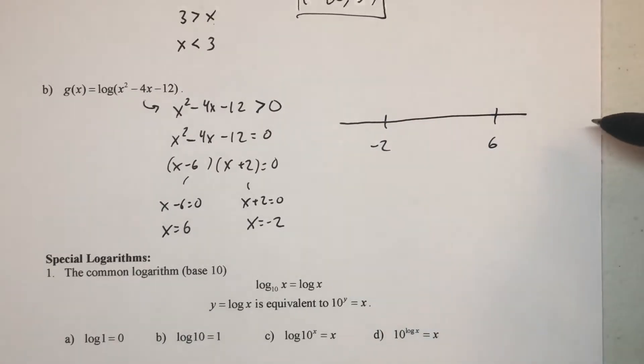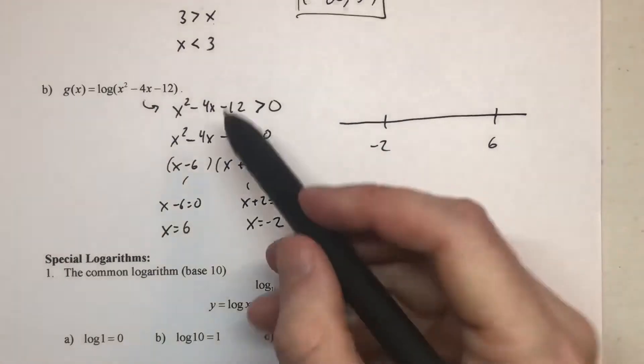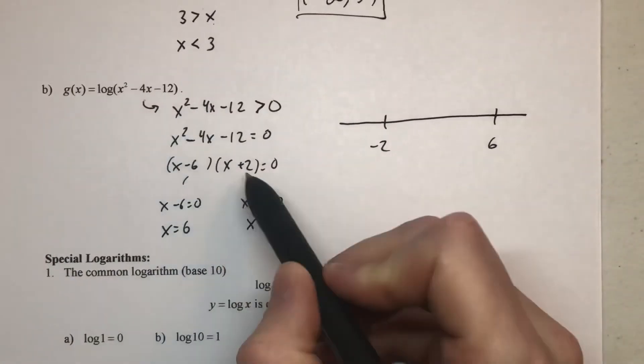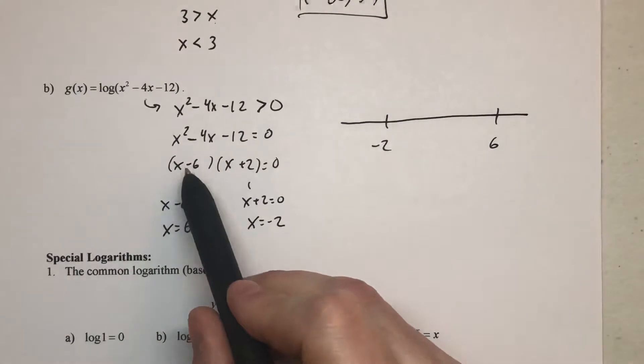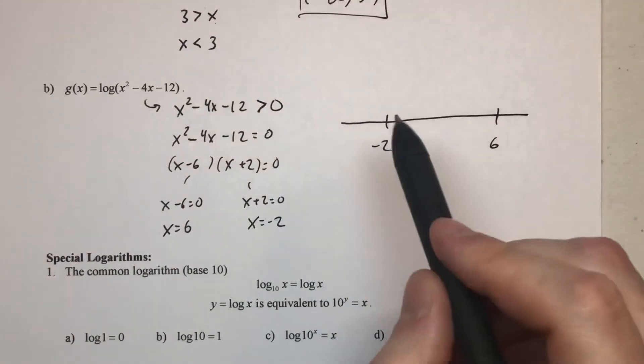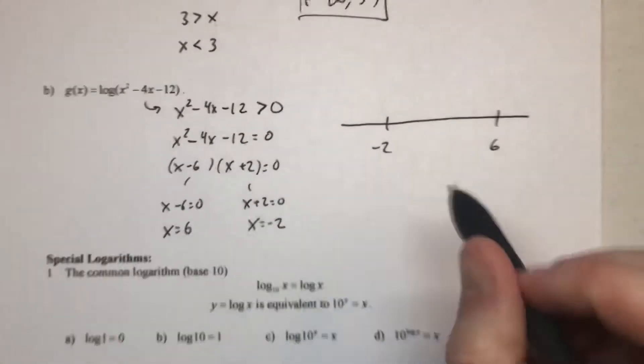And then whether you use interval points to test the sign or you use end behavior and multiplicity, that's up to you. But remember, this is a simple one. Each factor only occurred once. So each of those is a multiplicity of one, each of those is a point where it does cross the x-axis.